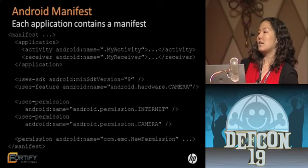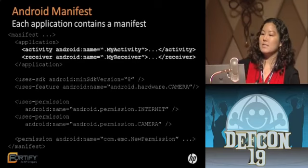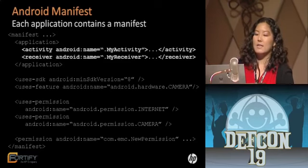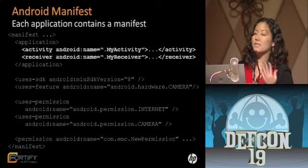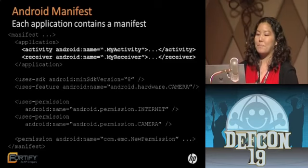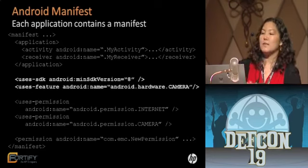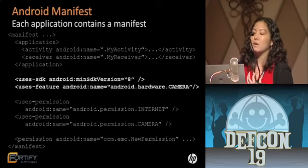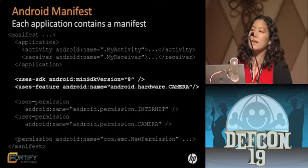Each application contains a manifest that does a couple of things. First, it declares application components — as you can see in this example Android manifest, there's a 'my activity' and a 'my receiver'. If the developer doesn't declare components here, the system won't know about them. The manifest also specifies application requirements such as platform versions, input configurations, or hardware requirements. In this example, the developer is requesting the camera feature and requiring a minimum SDK version of 8.